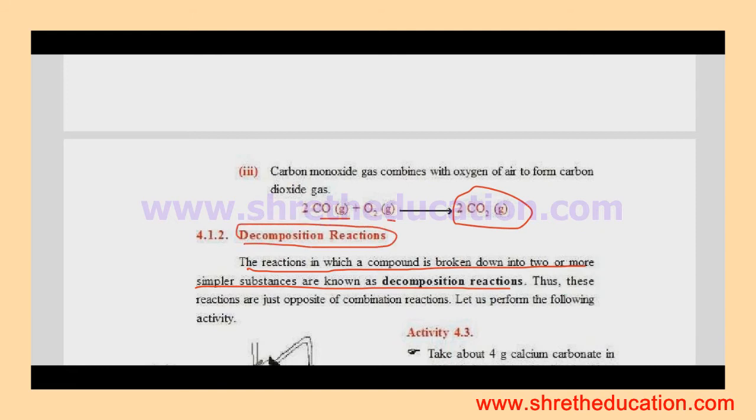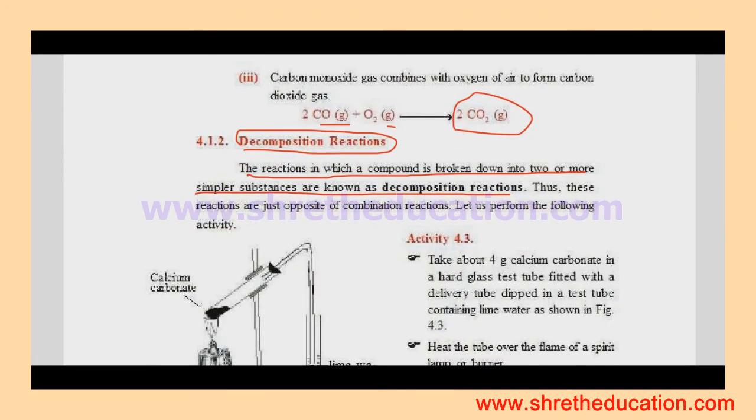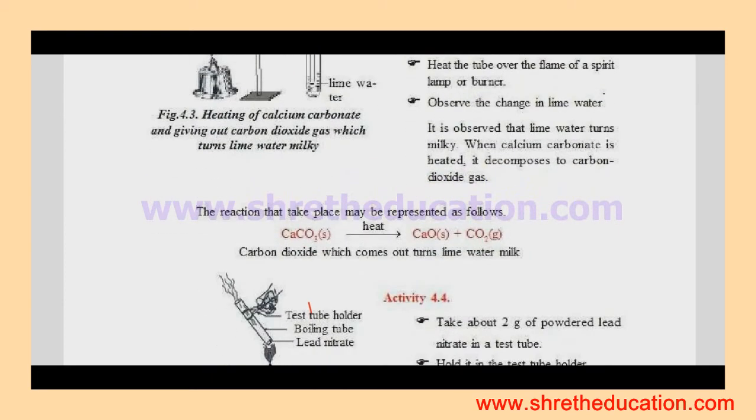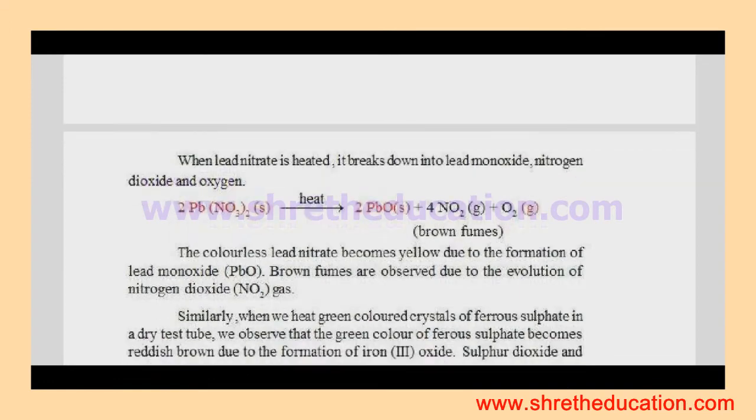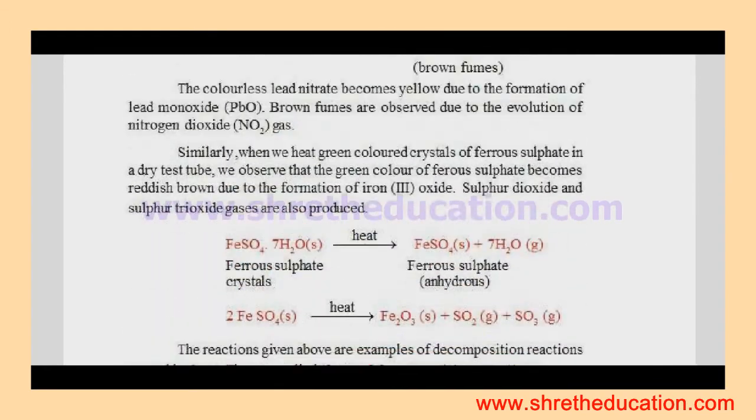Now decomposition reactions - it's the opposite of combination reaction. The reaction in which a compound is broken down into two or more simpler substances are known as decomposition reactions. For example, calcium carbonate is heated and broken down into calcium oxide (quick lime) and carbon dioxide gas.